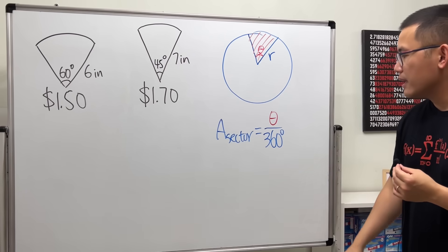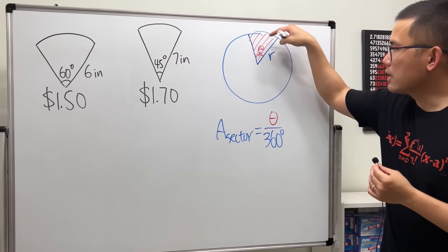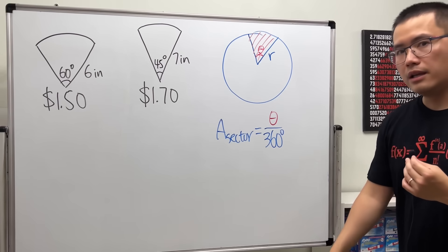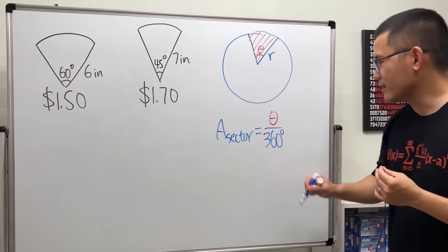This will tell us the portion of this compared to the whole circle, and the whole circle has area, what? Pi r squared, yes.